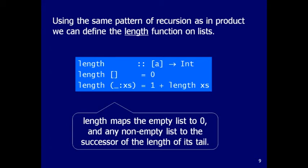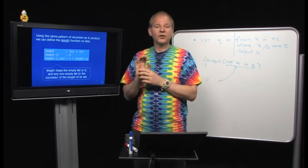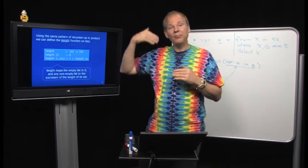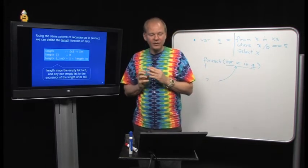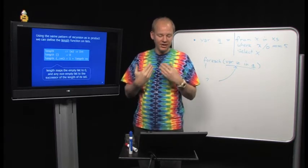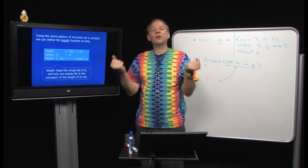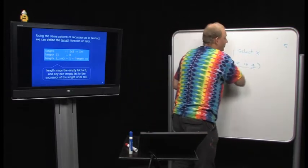Next function is length. It has a very similar structure to product — defined by induction over a list. The length of the empty list is zero. The length of a list of something cons onto another list is one plus the length of the remainder. We will see in later lectures how we can abstract from that structure, because it gets repetitive seeing the same pattern. We want to define a higher-order function that captures this recursion pattern.